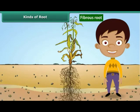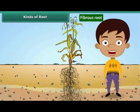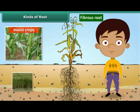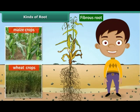Fibrous roots, on the other hand, are a cluster of fine roots that spread into the soil. For example, roots found in maize and wheat crops. A fibrous root has no main root.